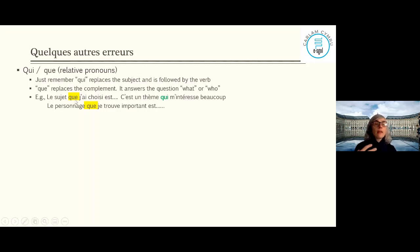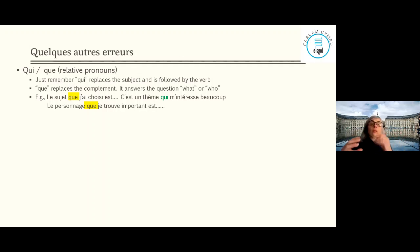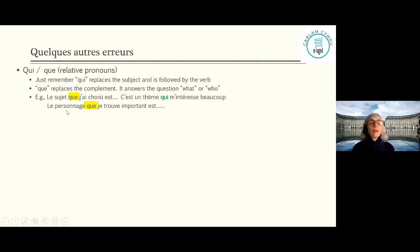'Le personnage que je trouve important' — 'que' because 'je' is the subject and 'personnage' is the object of 'trouver'. You can also tell because there is already a subject ('je') between 'que' and the verb, so it cannot be 'qui'. Ask yourself: what do I find important? — that character. So it's 'que'. Take time to go through these examples on your own and think about the logic.